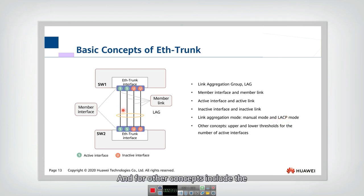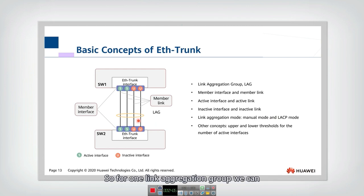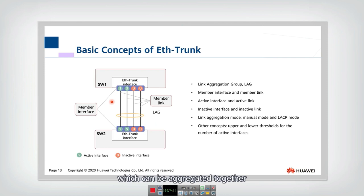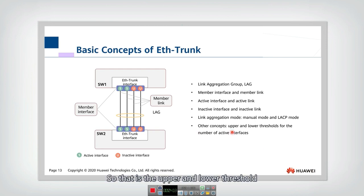Other concepts include the upper and lower threshold for the number of active interfaces. For one link aggregation group, we can set the maximum number of links that can be aggregated together and the minimum number of links that can be aggregated together. These are the upper and lower thresholds — some basic concepts for EtherTrunk.